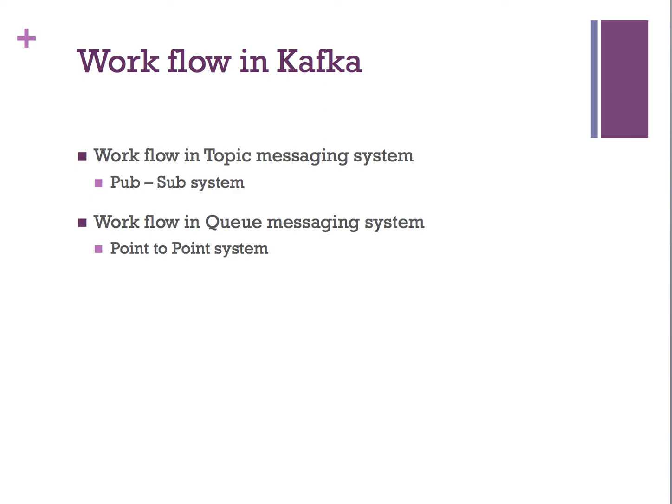For example, consider topic 1 and group ID as group 1. Once a new consumer arrives, Kafka switches its operation to share mode and shares the data between the two consumers. This sharing continues until the number of consumers reaches the number of partitions configured for that particular topic.